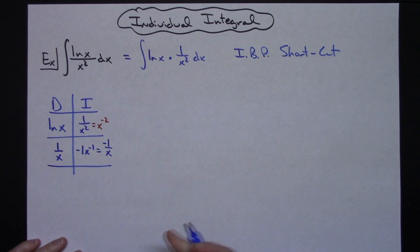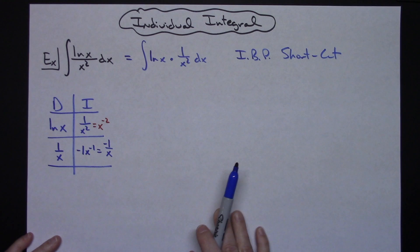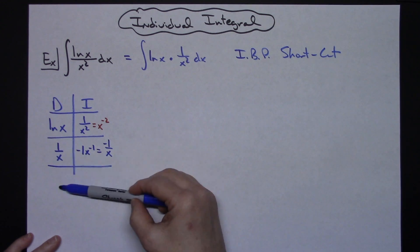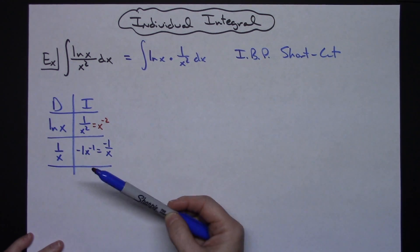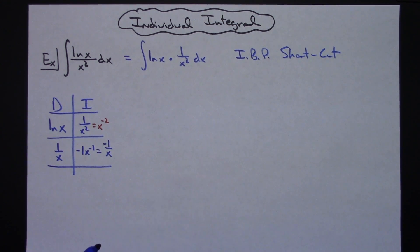Now the key here is knowing when to stop and when to keep going. Ideally we want that derivative column to go to zero. In this case it's not going to. We can see what's going to happen if I keep taking the derivative—I'm going to just keep getting smaller and smaller, so it's not going to do us any good.